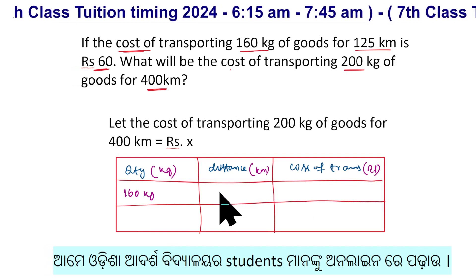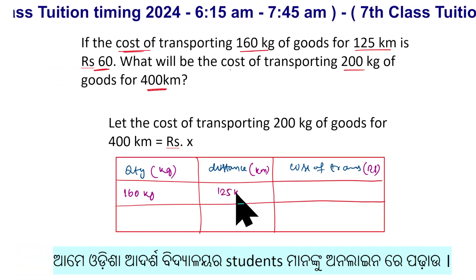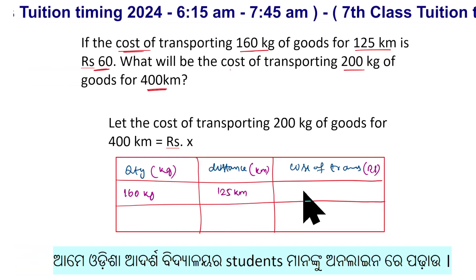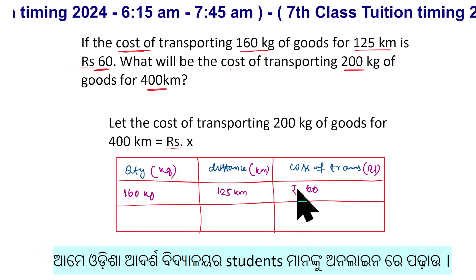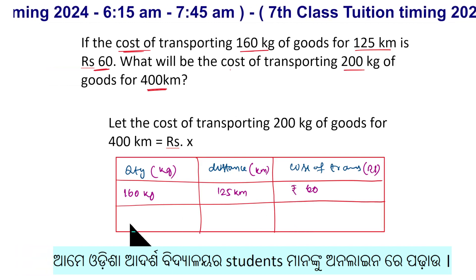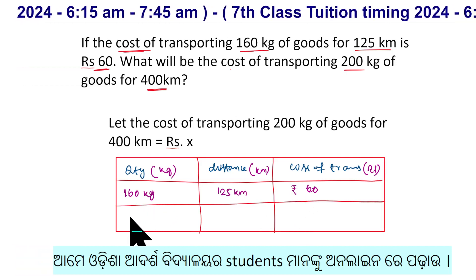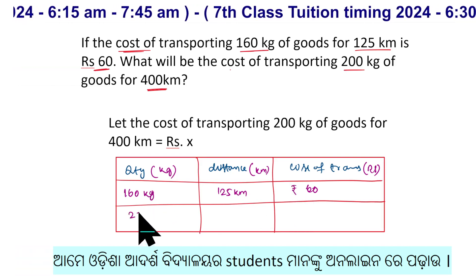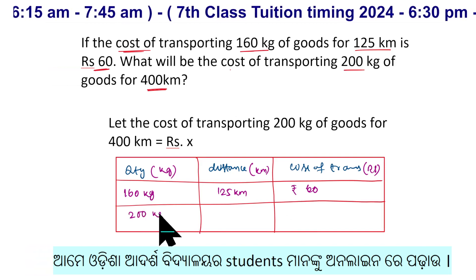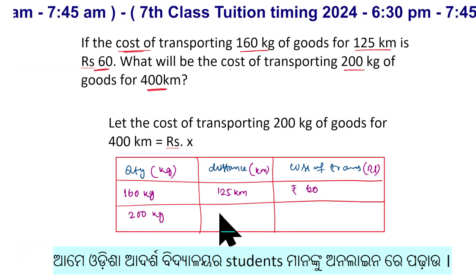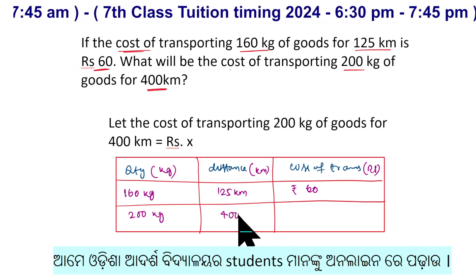In the first row we have: 160 kg, 125 km, and Rs. 60. In the second row we have: 200 kg, 400 km, and the unknown price X.